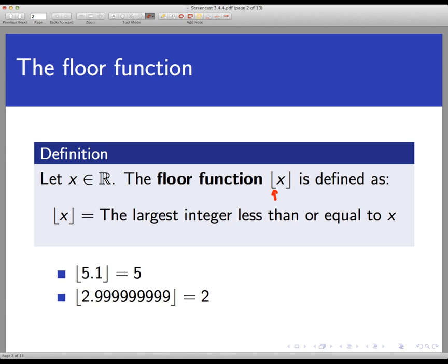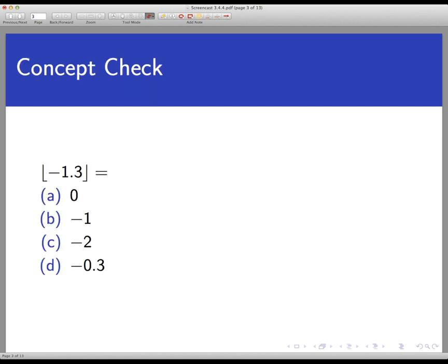The proposition for this example involves the floor function. So let's do two concept checks to help you instantiate the definition. First, what is the floor of negative 1.3? Is it 0, negative 1, negative 2, or negative 0.3? Pause the video and come back when you have an answer.